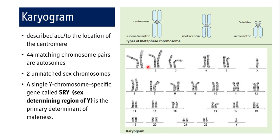To study the chromosomes of a single organism, the geneticist arranges micrographs of the stained chromosomes according to their size, shape, and banding pattern, making homologous pairs. The size of the chromosomes decreases from chromosome 1 through to Y. There are 44 chromosome pairs known as autosomes.